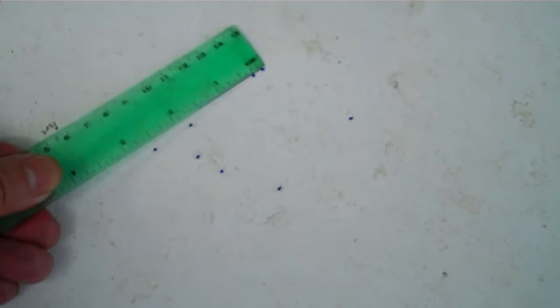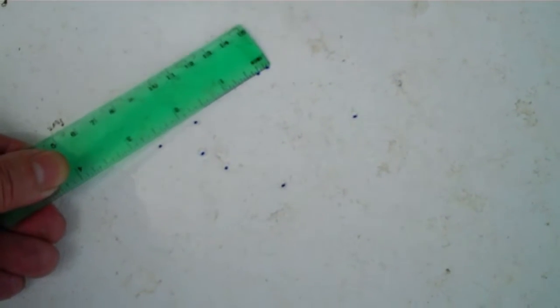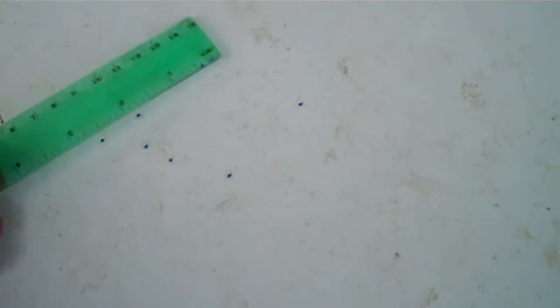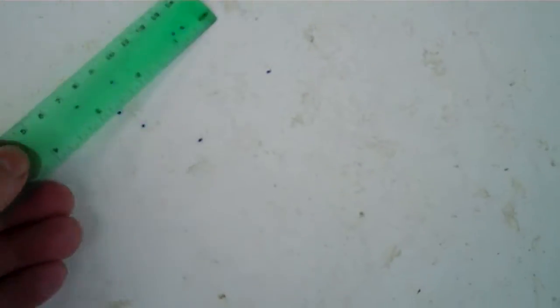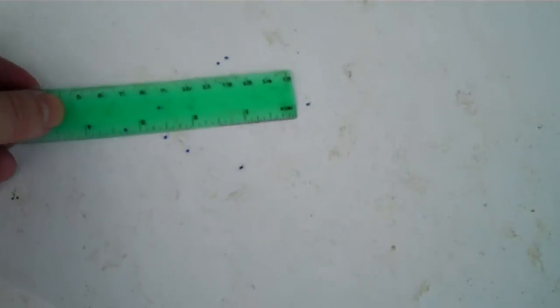This is why the DAISY 840 is pretty much a pop can killer. A pop can is about two and a half to three inches wide, and that would be a good target for the DAISY 840.